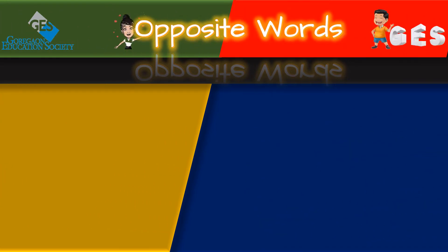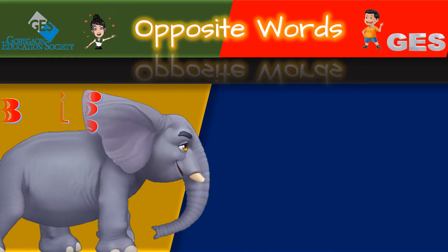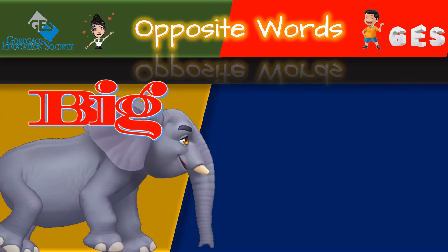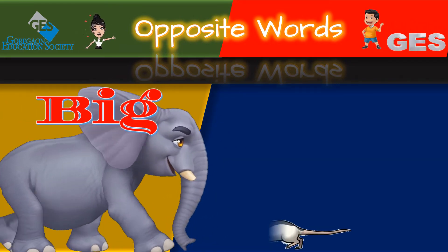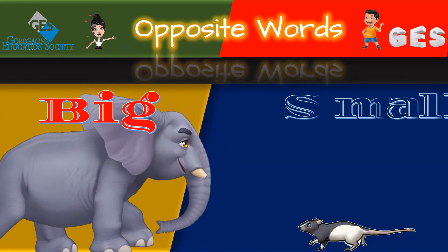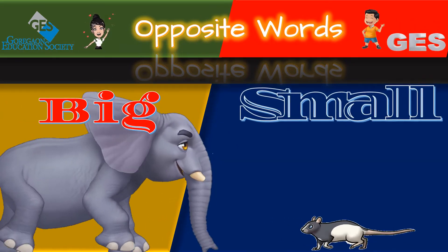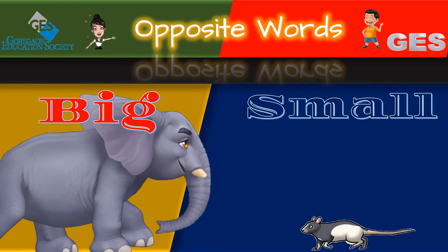Next is big, small. So the opposite words are big and small.